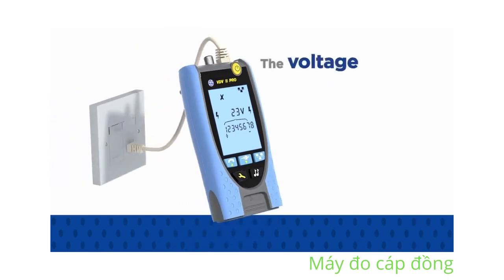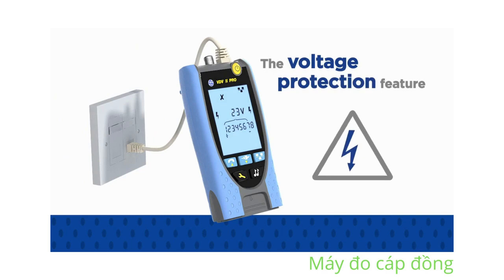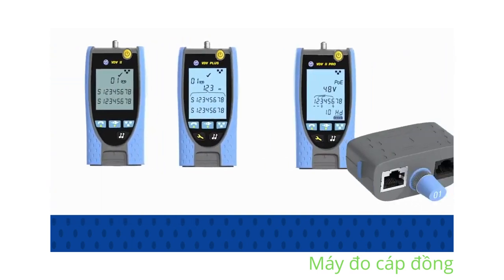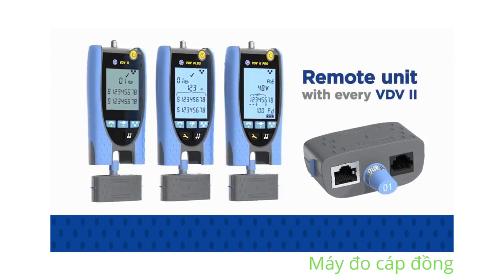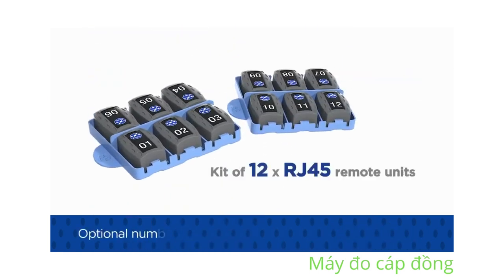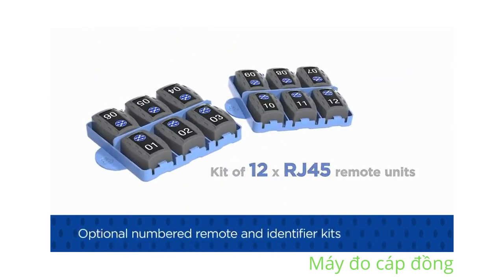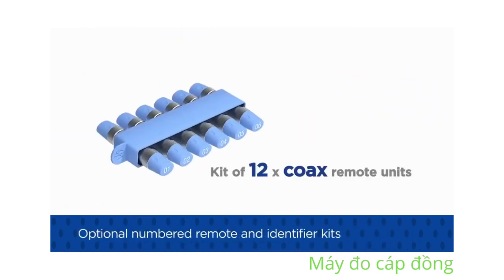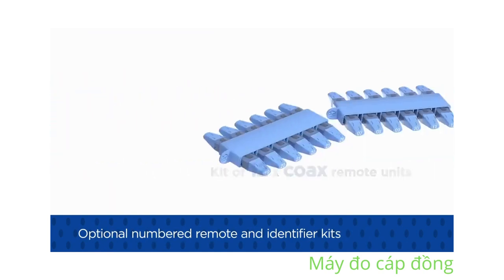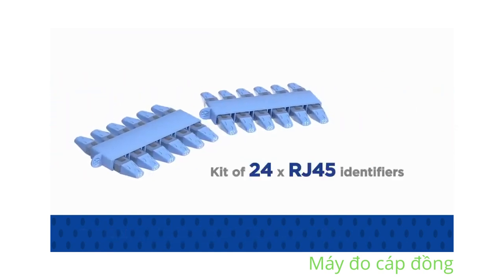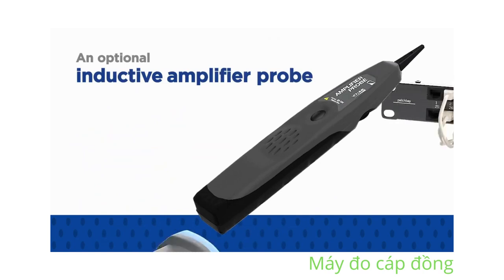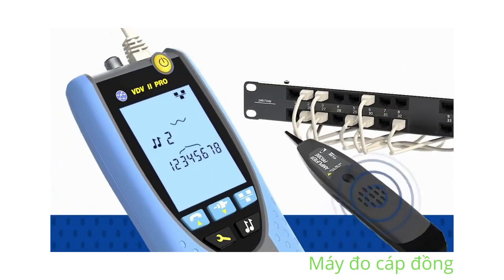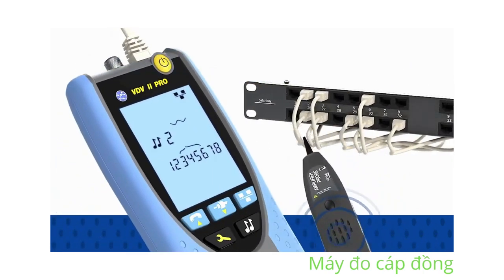The voltage protection feature prevents damage to any VDV2 when connected to a powered outlet. A remote unit for cable testing is supplied with every VDV2. Additional numbered remote and identifier kits can be purchased to speed up testing when the user is working alone. An optional inductive amplifier probe will detect tones generated by any VDV2 to facilitate cable tracing.